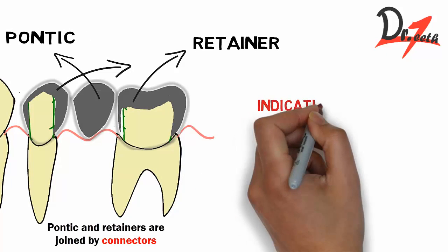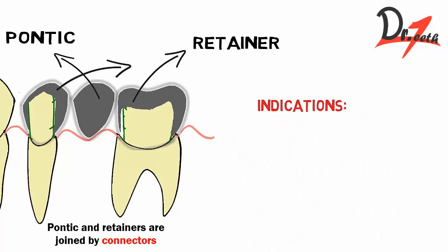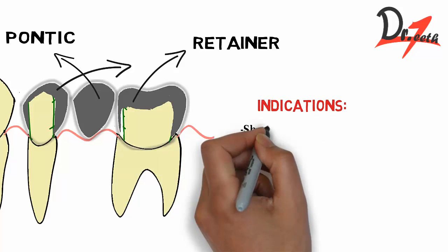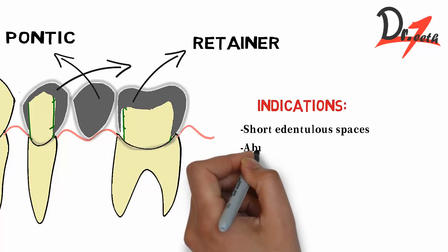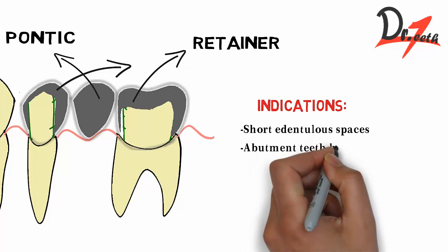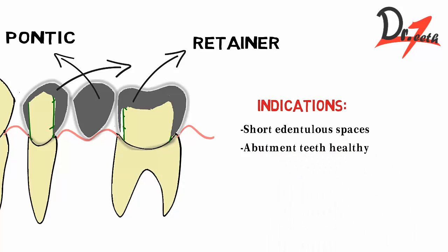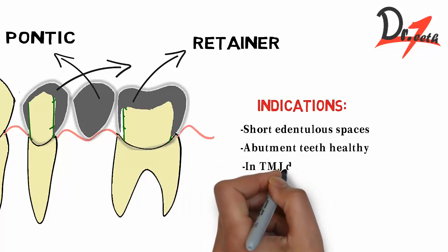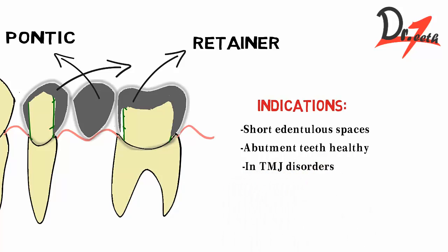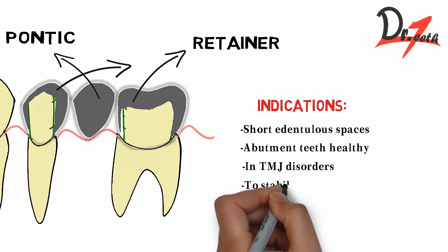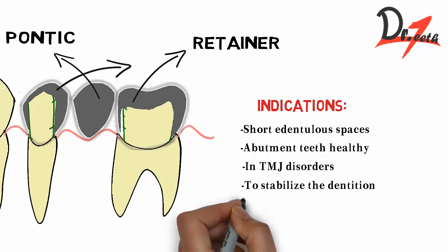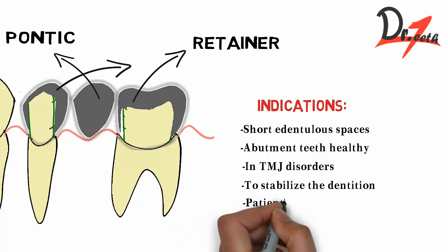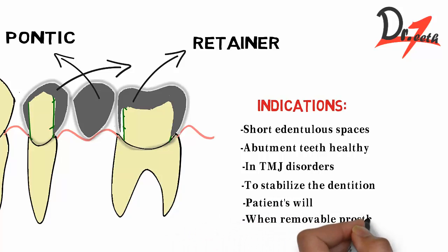Now there are some indications when we have to give it. Short edentulous space, when we have more abutment teeth, abutment teeth should be healthy so it will be supported. We give it in TMJ disorders so that our dental occlusion will be harmonized. We also give it to stabilize the dentition because it acts as a splint. After periodontal therapy we can give it if the patient wants it.